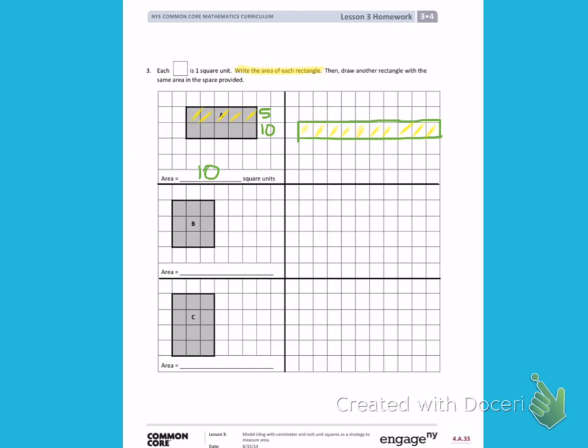Rectangle B has 1, 2, 3 squares going across. So I can skip count. 3, 6, 9. This rectangle has the area of 9 square units. So I need to draw another rectangle that has the area of 9 square units. If I count 3 across and 3 down, that has the area of 9 square units.